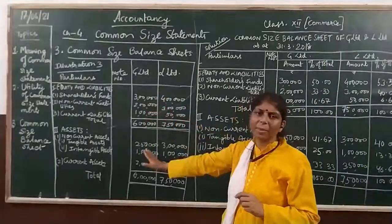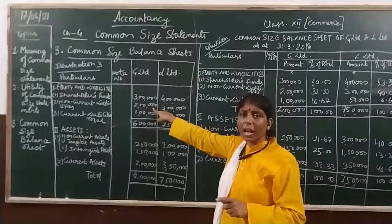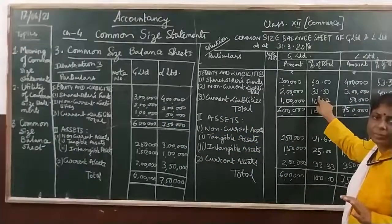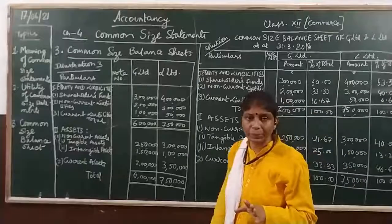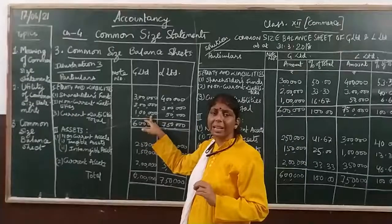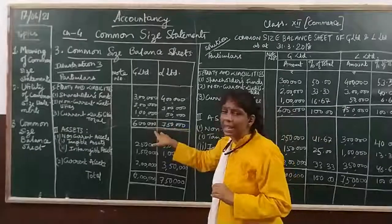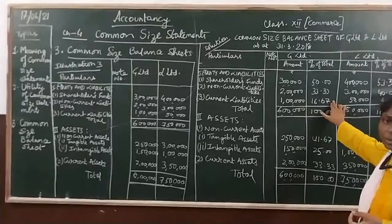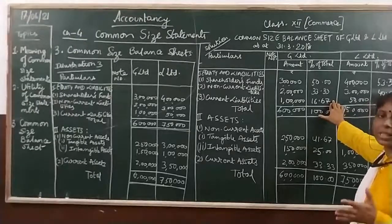For non-current liabilities of G Limited, the value is 2 lakhs. As a percentage of total 6 lakhs, that gives 33.33%. Then current liabilities of G Limited is 1 lakh — as a percentage of 6 lakhs, that is 16.67%.